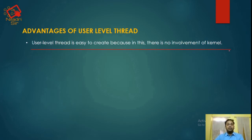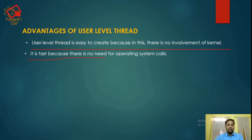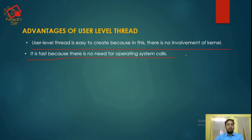User-level threads are fast because there is no need for operating system calls. Operating system calls are not required, which makes user-level threads much faster. It is also easy to run a user-level thread on any operating system since it has no kernel intervention and requires no OS calls.